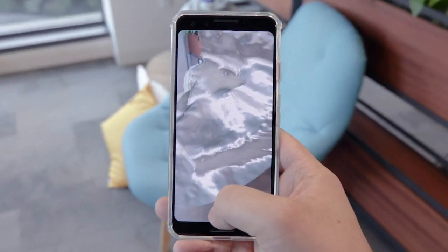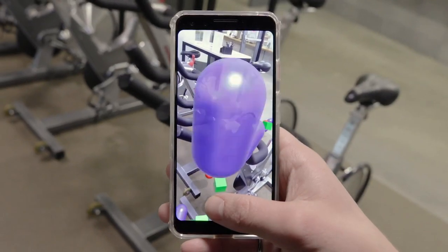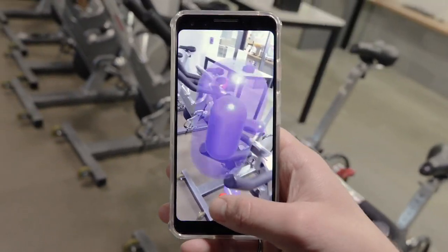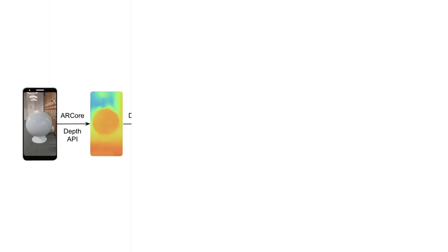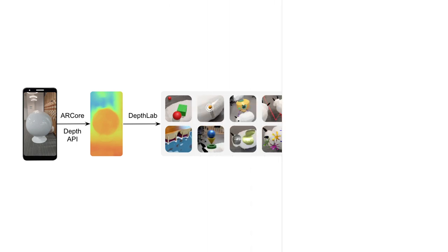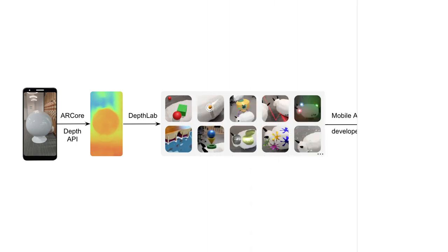It also supports surface interaction behaviors such as surface splatting, real-time mesh generation, and physics simulation. With a single RGB camera, we leverage the low-level depth map from the ARCore Depth API into reusable, customizable, and self-contained modules.